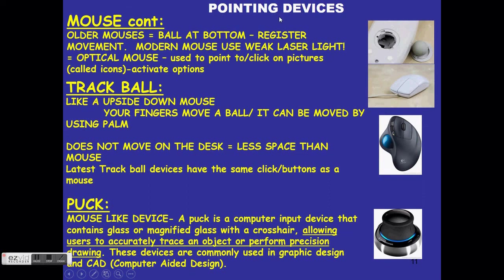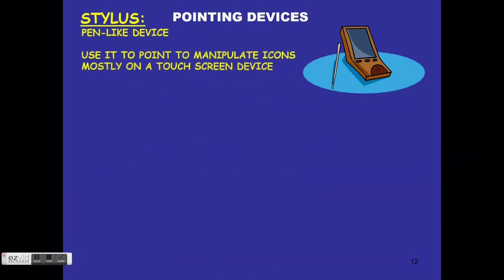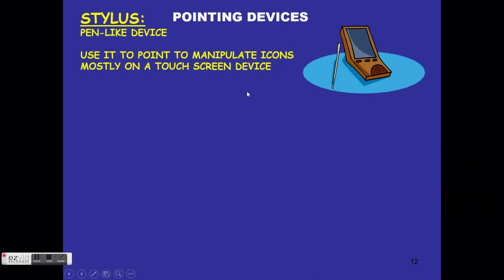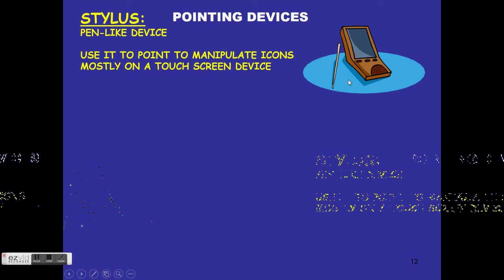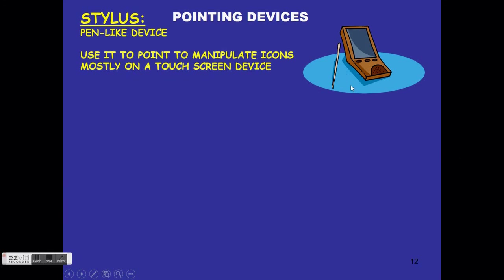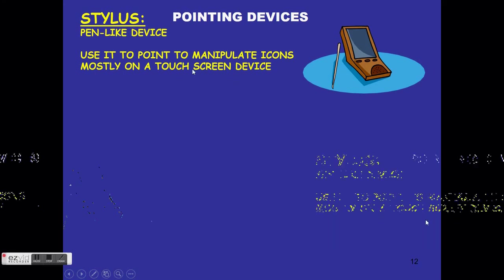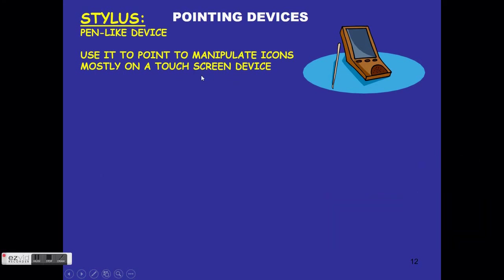A stylus is a pen-like device used to manipulate icons on a touch screen. You cannot use a stylus on a CRT screen or any screen that is not touch-enabled.